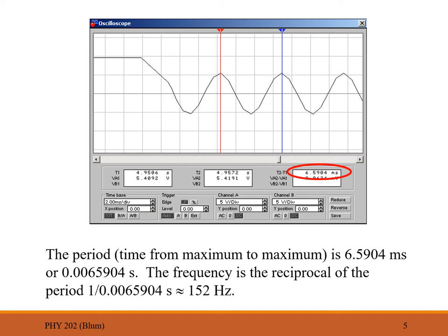A property related to the period is the frequency. If the period is the time for one cycle, the frequency is the reciprocal — the number of cycles per second. In this case, a reading of 659 milliseconds, or 0.00659 seconds, gives a reciprocal of 152 hertz.